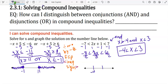Let's plot our solution. We have -4 and 3. There are no lines underneath the inequality symbols, so these are open holes. Since it's AND, we shade between the two numbers.